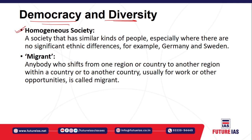Ethnically they should be similar — more or less similar. They should have common ancestral descent, common customs and practices. That type of society we call homogeneous society. Heterogeneous society, on the other hand, is one which has significant ethnic differences — different ethnic groups, different ancestral origin, different customs, different practices mingled together in a particular territory.